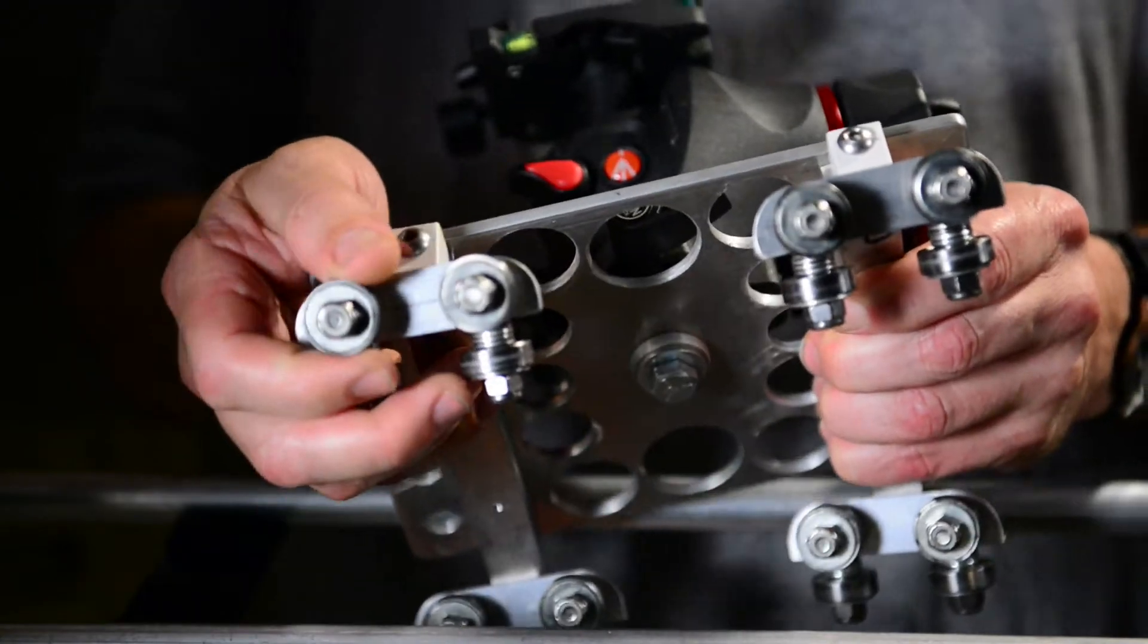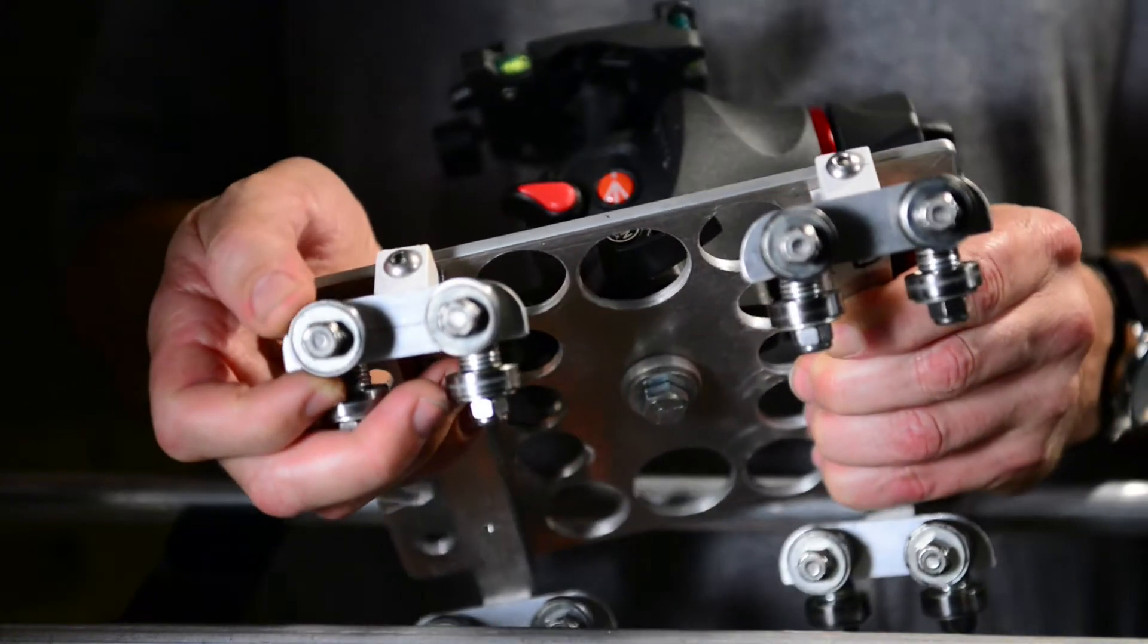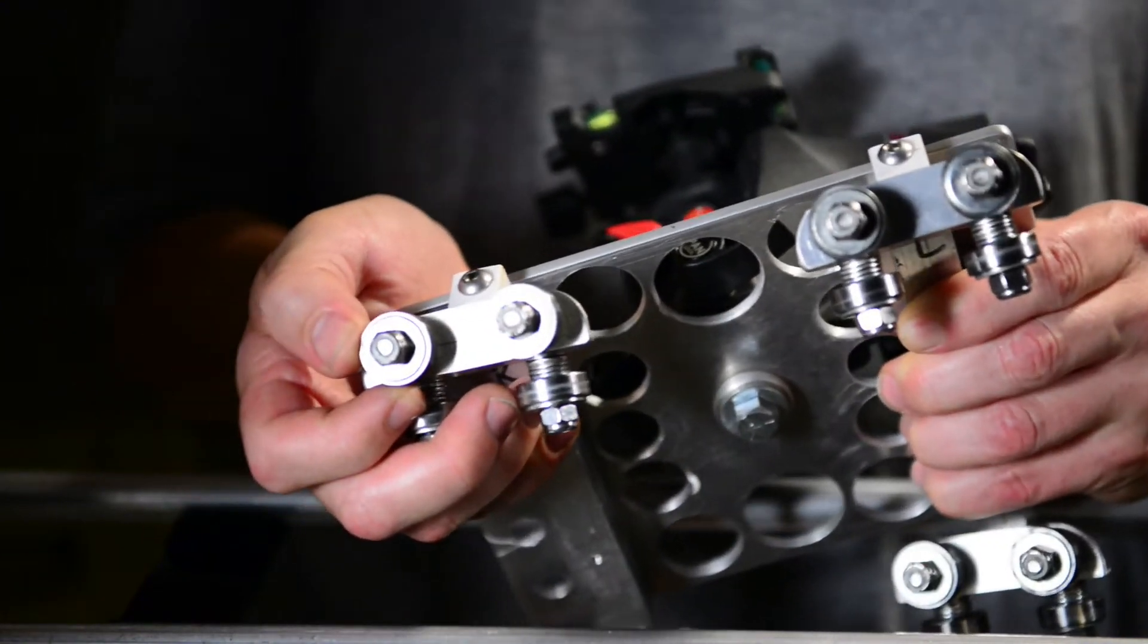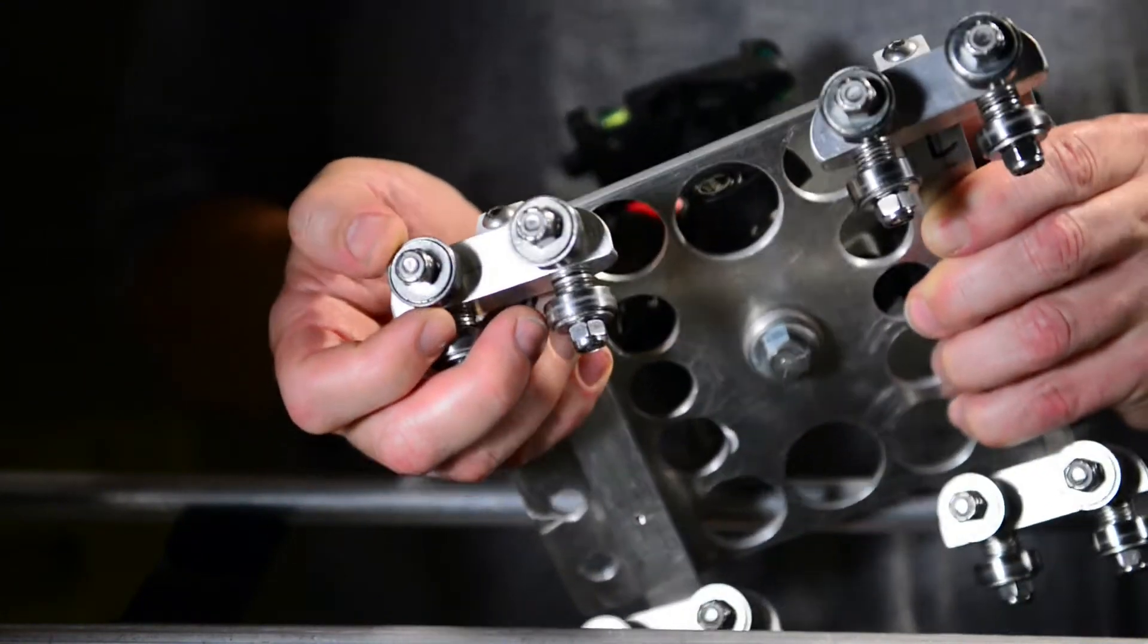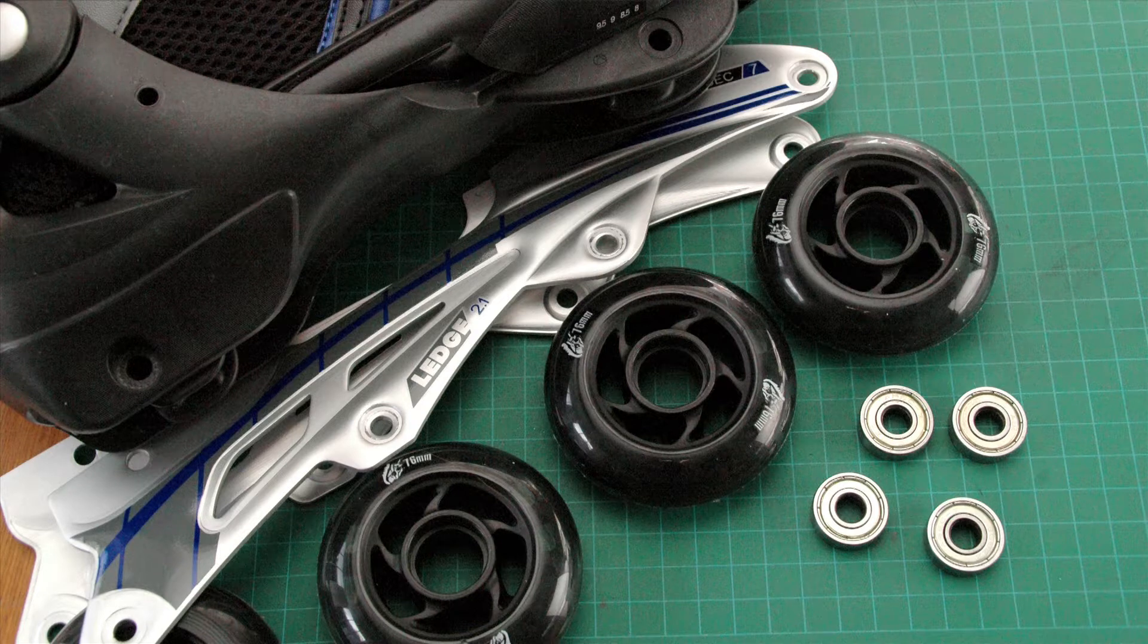The roller bearings can be a bit of a challenge as they cost about 10 bucks each. So for 16 that comes to about 160 dollars. I managed to find a pair of inline skates on a clearance rack. That gave me 16 roller bearings for a total of 17 dollars.